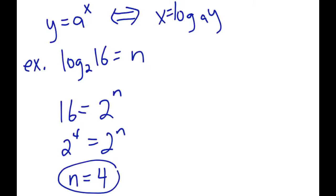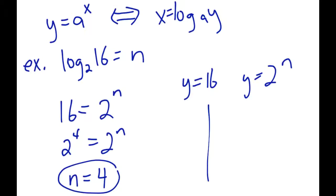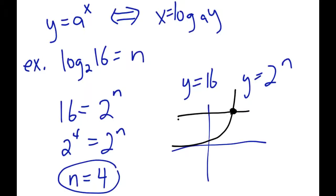You could also solve this by graphing. Just graph y equals 16 as a straight line and y equals 2 to the n as a curve, find the intersection point, and that intersection happens at x equals 4 — the same answer. Graphing will always work, but it takes time to plug in numbers and find the intersection. What we're going to look at today is how to solve these actually using logs instead of exponents or graphing, and most of you will find it's an easier, better way to go.